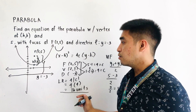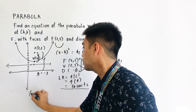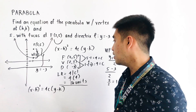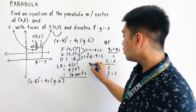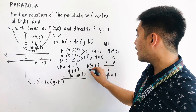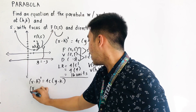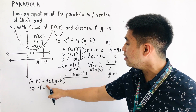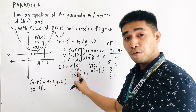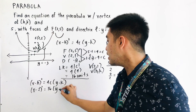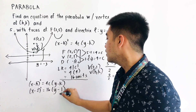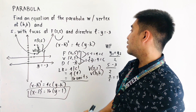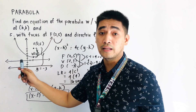We are not yet done. Now we get the standard equation: (x minus h) quantity squared equals 4c times (y minus k). The vertex is located at (2, 1), so h equals 2 and k equals 1. This becomes (x minus 2) quantity squared equals 16 times (y minus 1). This is the equation of the parabola with focus at (2, 5), directrix y equals negative 3, and vertex at (2, 1).